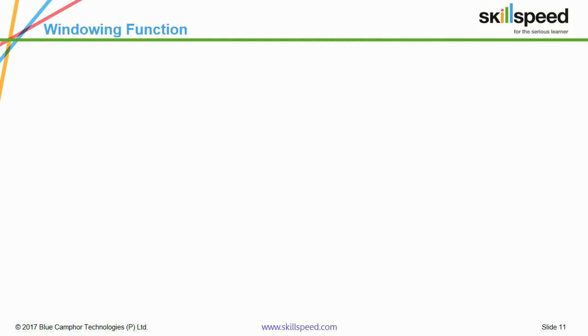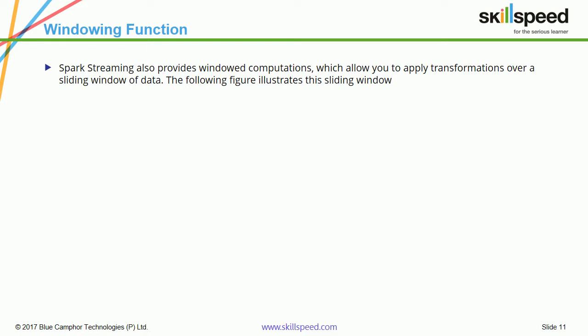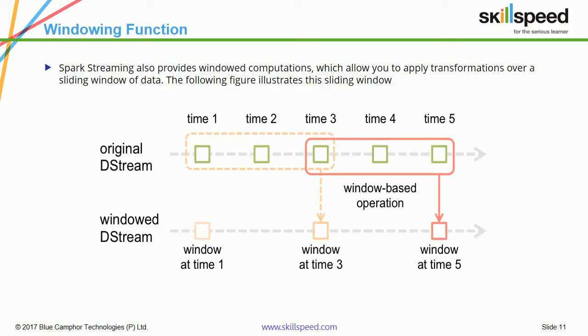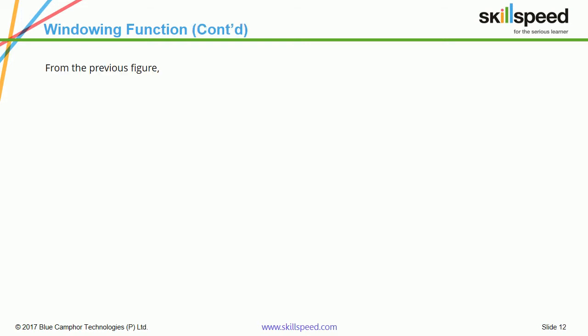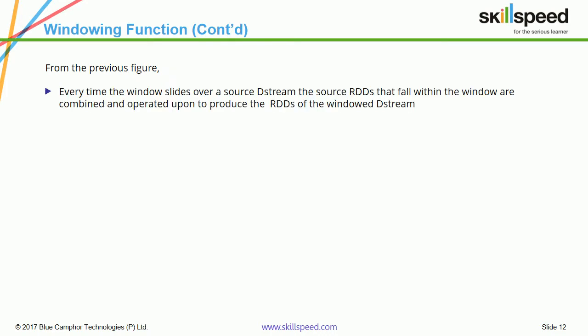What exactly is a windowing function? Spark Streaming allows you to apply transformations — basically run calculations — on data collected over a certain period of time, called a batch or window. In the diagram, the original D-Stream has time represented as time 1, 2, 3, 4, 5. You can have windows, for example from time 3 to time 5 — window at time 3, 4, and 5 — meaning whatever data is present at that particular time. Every time the window slides over a source D-Stream, the source RDDs that fall within the window are combined and operated upon to produce the RDD of the window D-Stream.